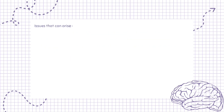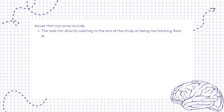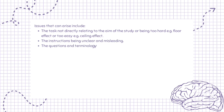Issues that can arise include the task not directly relating to the aim of the study or being too hard, e.g. floor effect, or too easy, e.g. ceiling effect. The instructions may also be unclear and misleading, and the questions and terminology may be ambiguous or too confusing or complicated for the participants to understand.